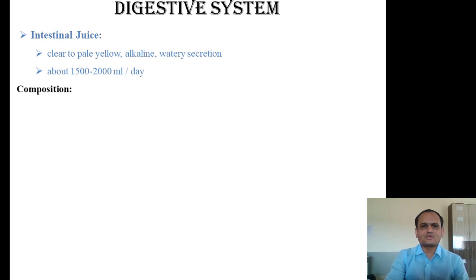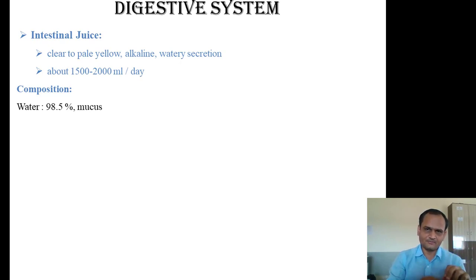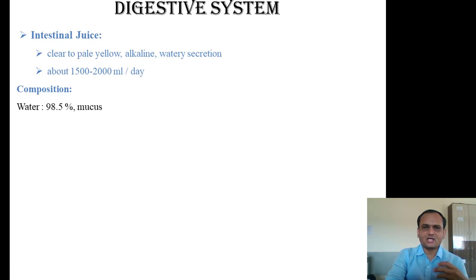The very first component, as it is a fluid, is water — 98.5% water is present in intestinal juice. This is followed by mucus, which is secreted by goblet cells. Goblet cells are interspersed among the columnar epithelial cells of the villi, known as enterocytes. The mucus secreted by goblet cells also becomes part of the intestinal juice. Water and mucus are common components found in every digestive juice.